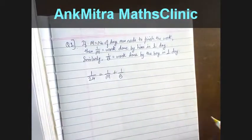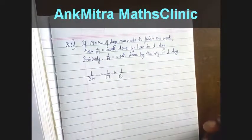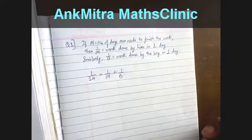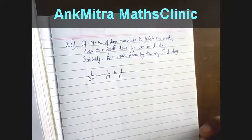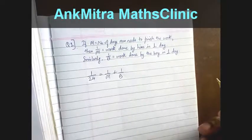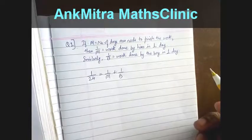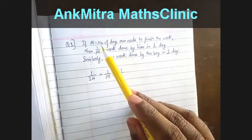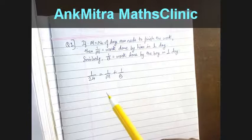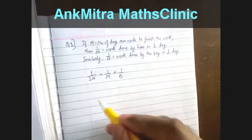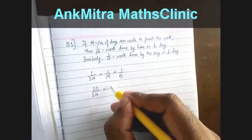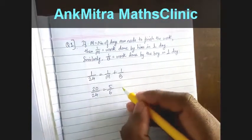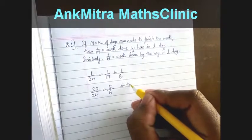Then in the second case, if the man works alone for the last 6 days then the total time required to finish the work is 26 days. That means for the first 20 days the man and the boy work together. In those 20 days they will be finishing 20 by 24 part of the work which is equal to 5 upon 6 part of the work in the first 20 days.